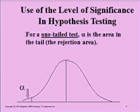This lesson is on the use of level of significance in hypothesis testing. For a one-tailed test, alpha is the area in the tail, the rejection area.